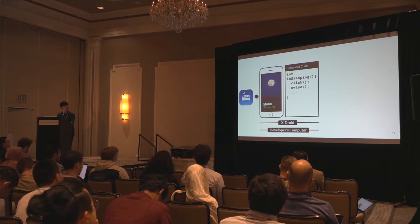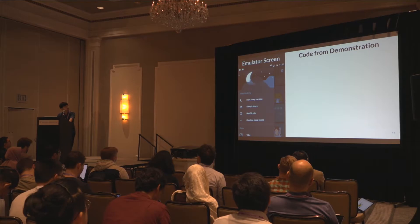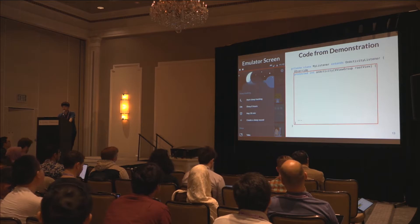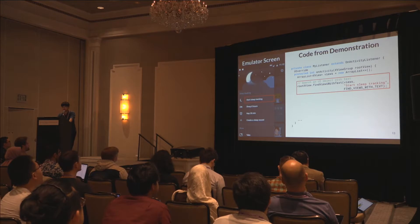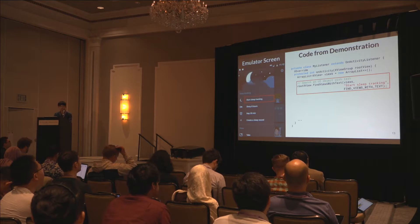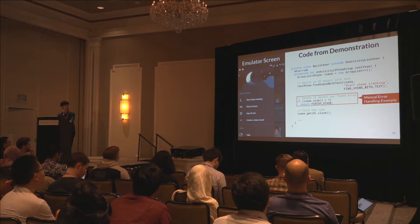Let me explain the code generation in more detail. On the left side of the slide you'll see a Sleep Tracking app screen, and on the right I'll show the code generation. For each screen of an Android app, we provide a callback function. When you click the Start Sleep Tracking menu, CrossDroid generates code for locating that UI component — it searches for the 'Start Sleep Tracking' string and locates the UI component. To emulate your click, it calls the click method on that UI component. This is fully programmable Java code, so you can customize it, for example by adding error handling code.